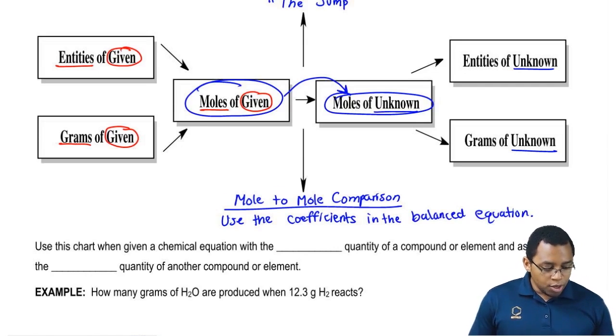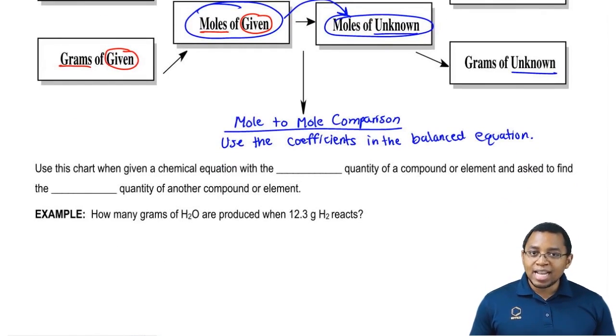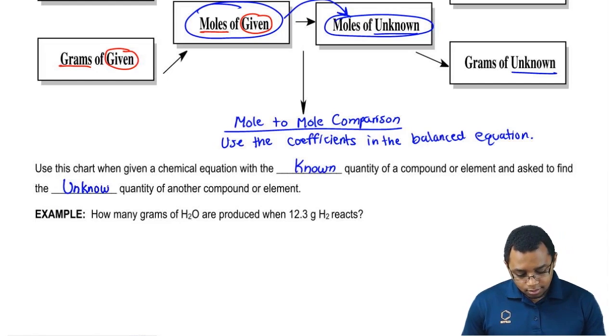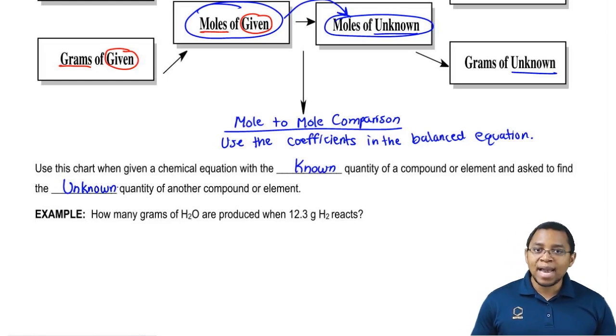Now, when do we use this chart? We use this chart any time they give us a chemical equation, a balanced chemical equation, with the known quantity of a compound or element, and they ask us to find the unknown quantity of another compound or element.